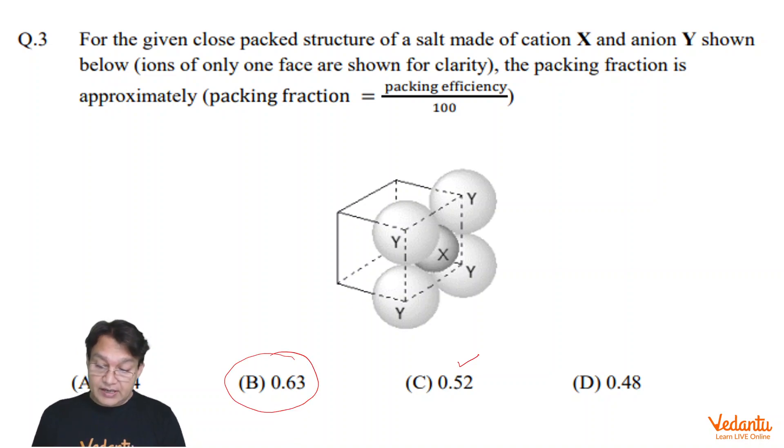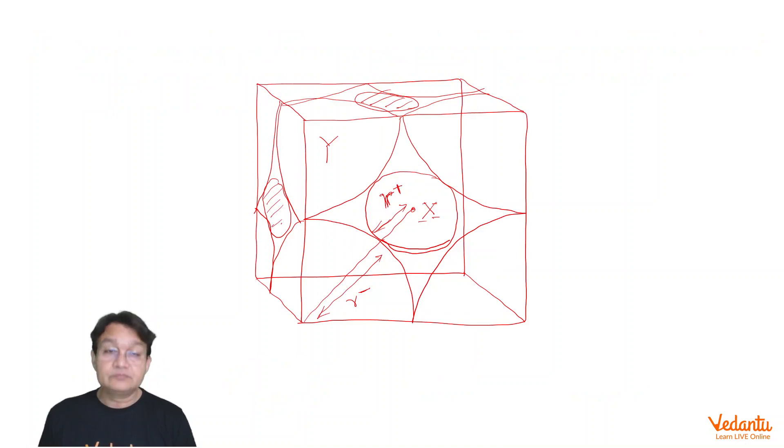But can we do it and confirm that this is the correct option? So let us see how to solve it in a perfect manner. This should be the structure in which Y atoms are forming simple cubic packing and X atoms are present in square planar void.